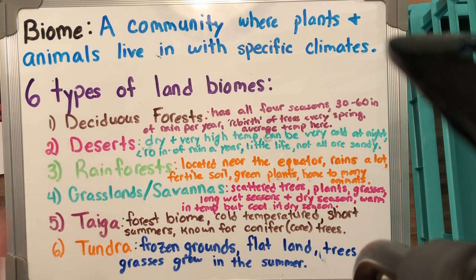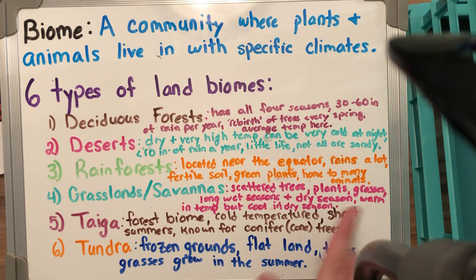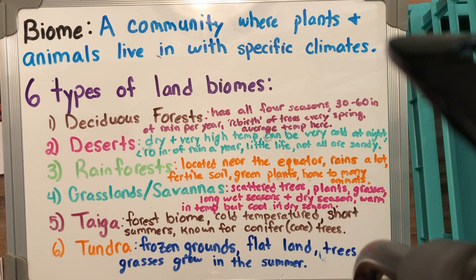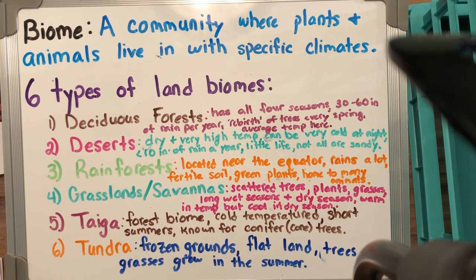We're going to start off with a deciduous forest, which is pretty well known in the United States. If you live in the United States like we do, we are a deciduous type of biome. The reason why is because we get all four seasons — that's the big thing. We get about 30 to 60 inches of water per year, and there's a rebirth of trees and plants every spring. We have a pretty standard temperature of about 70 degrees.